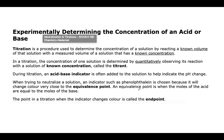So there are a few key terms. The titration is a procedure that we use to determine the concentration of a solution by reacting a known volume of that solution with a measured volume of a solution that has a known concentration. So you've got an acid and a base — one of them is going to have a known concentration and known volume, and you're going to add the other into it to figure out how much it'll take to neutralize it.